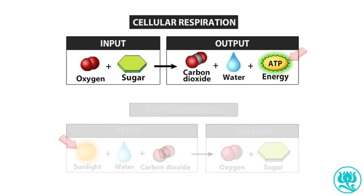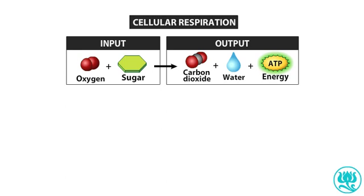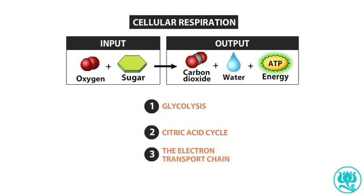Cellular respiration occurs in three basic steps: glycolysis, the citric acid cycle, and the electron transport chain. During these processes, food molecules such as glucose are gradually broken down, and their energy is used to produce ATP.